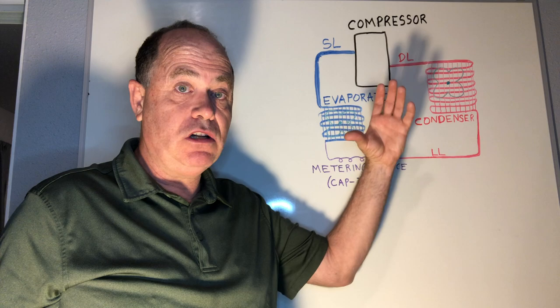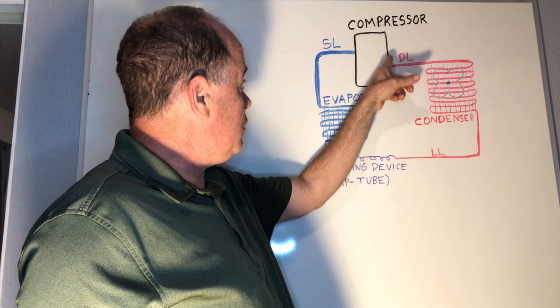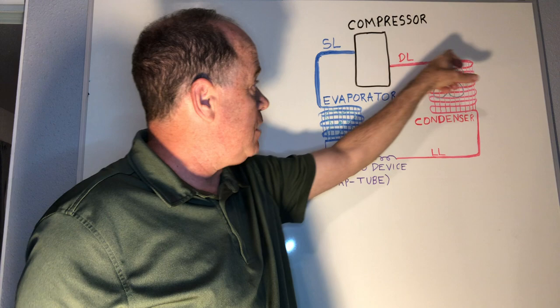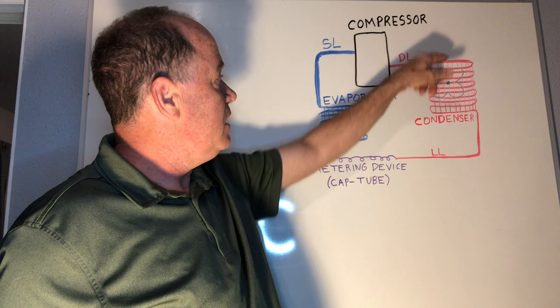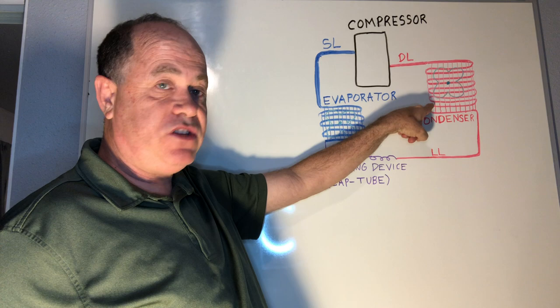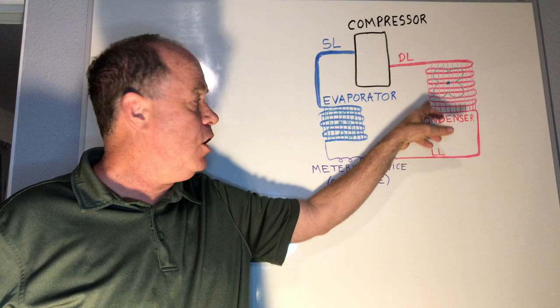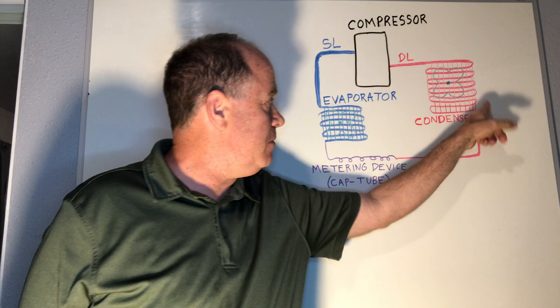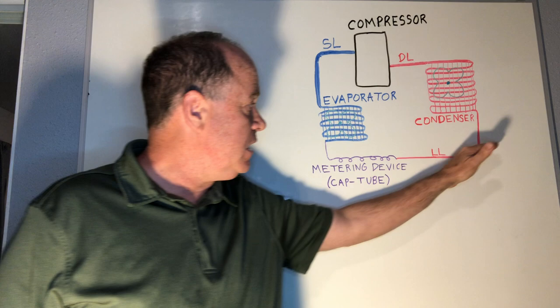The compressor sucks the refrigerant from the suction line and discharges it out the discharge line — hot, highly superheated vapor. As it travels down the discharge line it starts cooling even before the condenser. Traveling through the condenser it condenses — going from 100% vapor to mixed states to 100% liquid at perhaps 100°F. Then additional heat is removed, and if you measure 80°F on the liquid line with a condensing temperature of 100°F, you have 20 degrees of sub-cooling. Then the cycle repeats.